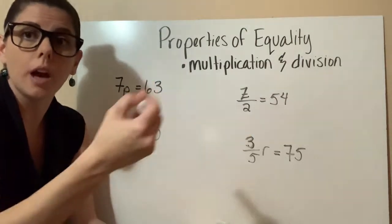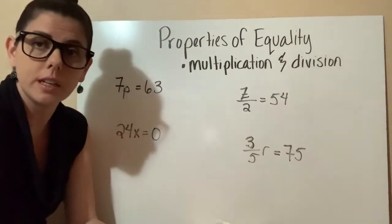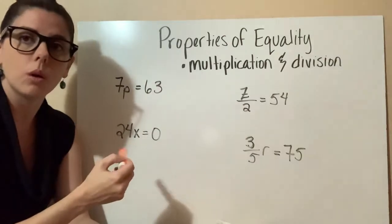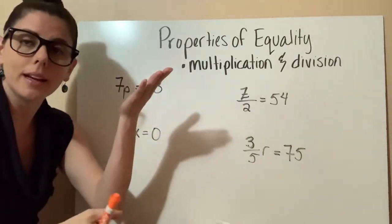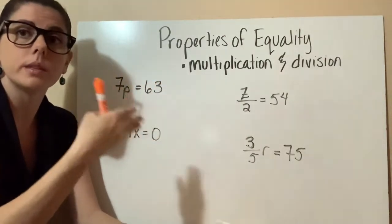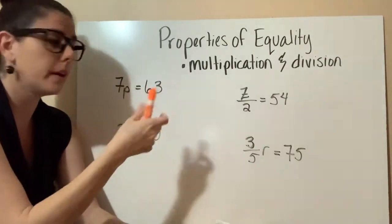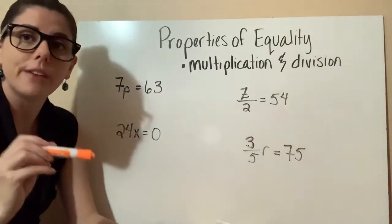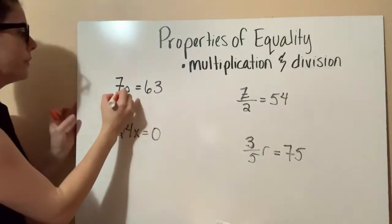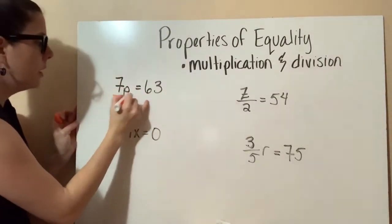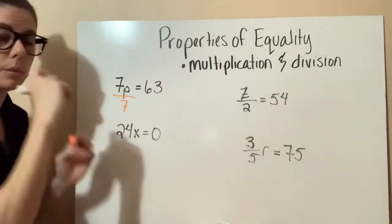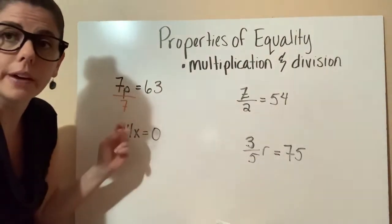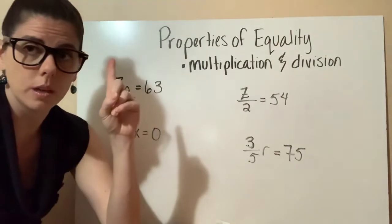Just like if you were adding 15, you would do the opposite and subtract 15 from both sides. In this case, we're going to do the same thing — only instead of adding, we're multiplying. So instead of multiplying by 7, we are going to divide by 7. We turn that into a fraction with 7 on the bottom, and 7 divided by 7 equals 1.